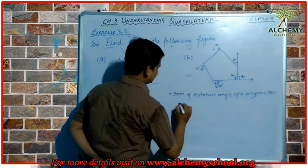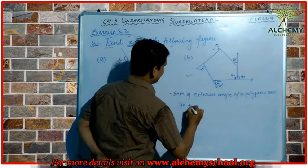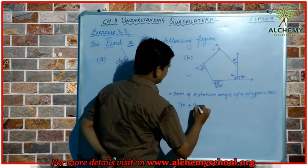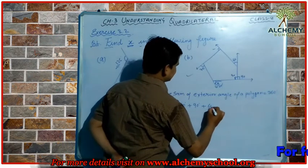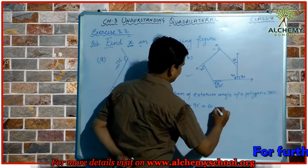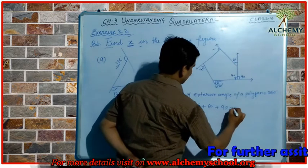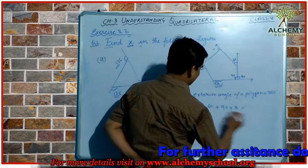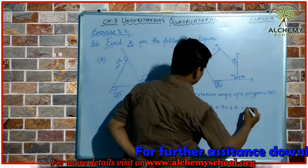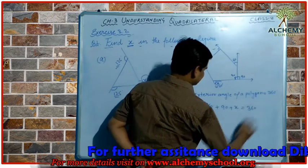We add: 70° + 90° + 60° + 90° + x = 360°.